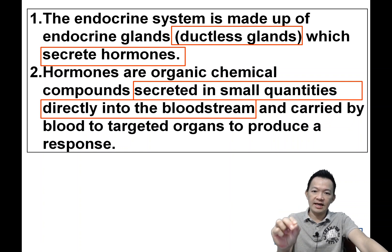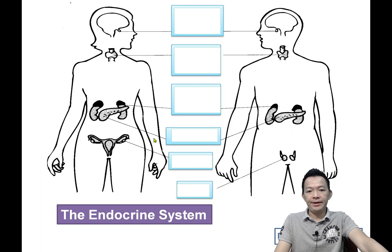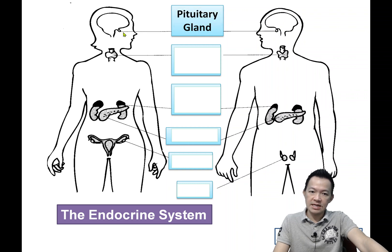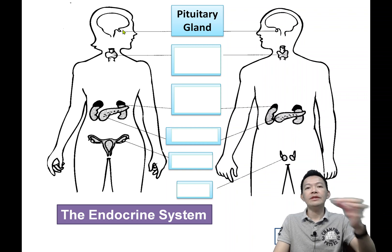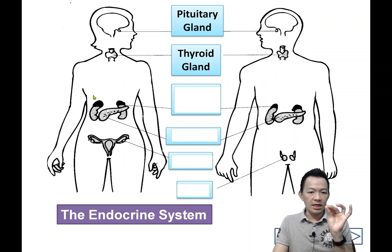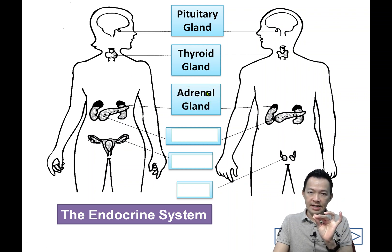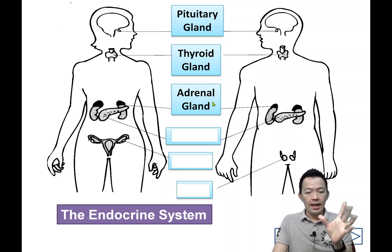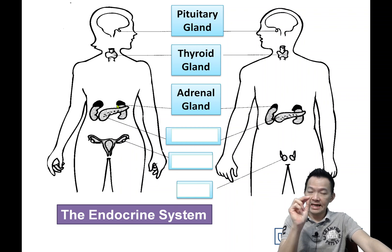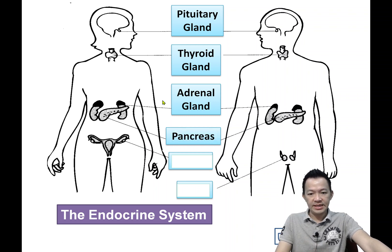Any examples of endocrine glands? We have some examples. Number one, under our brain — in our brain — we have a master gland. This is the gland we call the pituitary gland, Nau Xia Xian. Or somewhere around the throat, we have another gland called the thyroid gland, Jia Zong Xian. Above the kidney, at the adrenal area, we have another gland called the adrenal gland, Shen Sang Xian. And beside this, our pancreas is also a gland — it is also another endocrine gland.